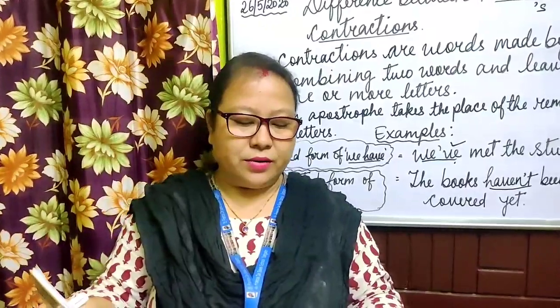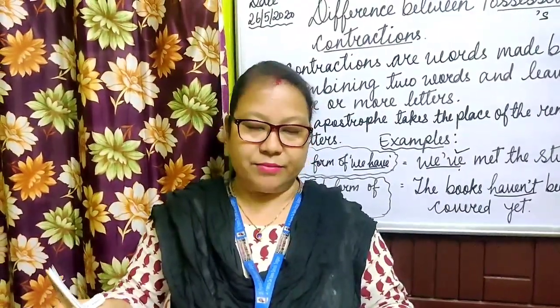Exercise 2.2: Rearrange the jumbled letters to make words related to family. Number 1: Family. 2: Father. 3: Brother. 4: Sister. 5: Cousin. 6: Mother.